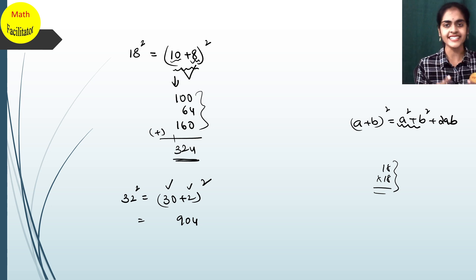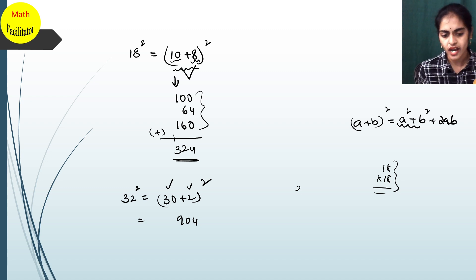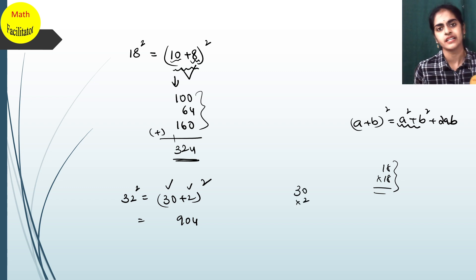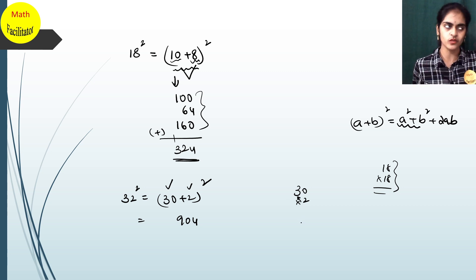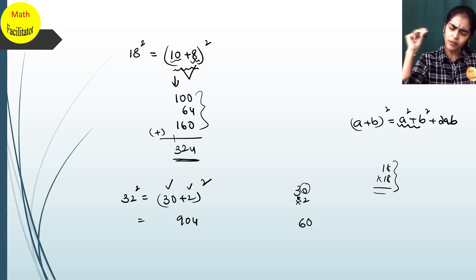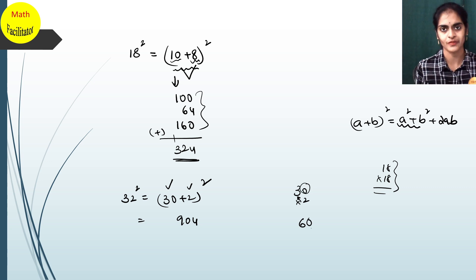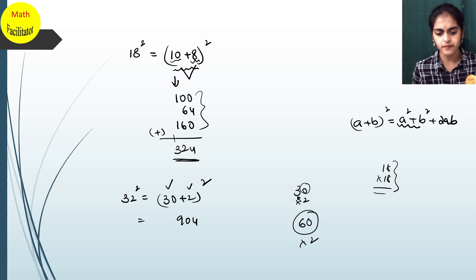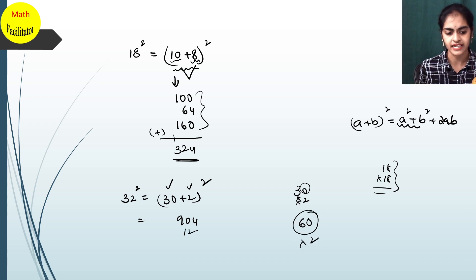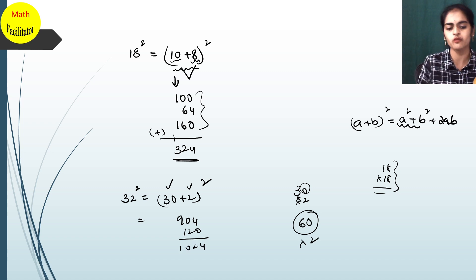Now the second step — the multiplication is super easy. You do 30 × 2: just do 3 × 2 = 6 and write a 0, so 60. Then double it: 60 × 2 = 120. So the final answer is 904 + 120 = 1024. While explaining I'm taking a lot of time, but if you practise just three or four questions you can do it super quickly.